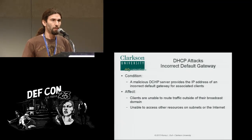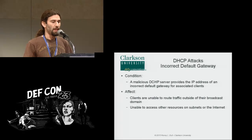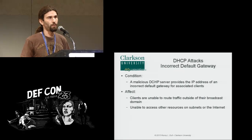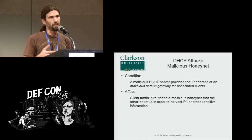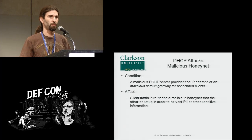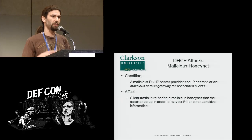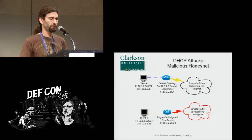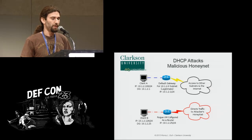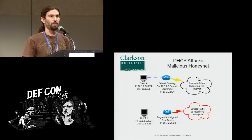The incorrect default gateway attack simply provides incorrect gateway information, causing a denial of service for systems trying to reach outside the local network. The malicious honeynet attack goes further: instead of just giving a bad gateway address, we ran a router system on another VM, pointed clients to that router, and routed traffic through it while mirroring the production network within the malicious honeynet to gather information. Client A goes through the regular default gateway happily, but Client B — associated with the rogue DHCP server — has its traffic directed to that honeynet for collection.